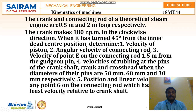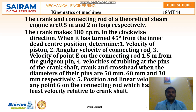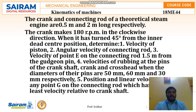First we will look at the crank and connecting rod used for a theoretical steam engine. The crank and connecting rod lengths are 0.5 meter and 2 meters respectively. The crank makes 180 rpm in the clockwise direction, and it is turned 45 degrees from the inner dead center position.